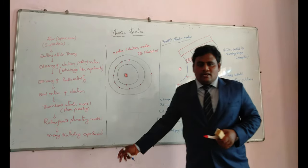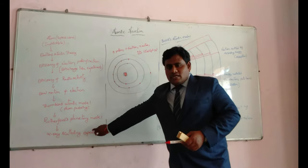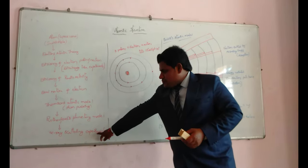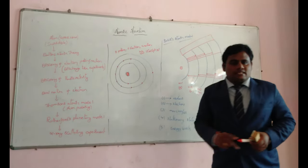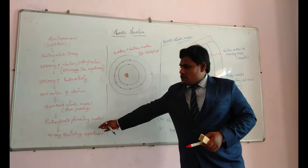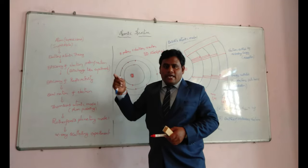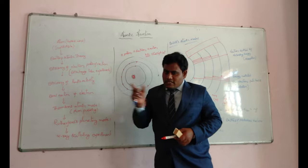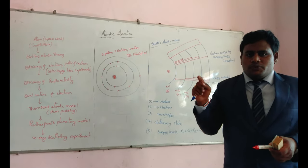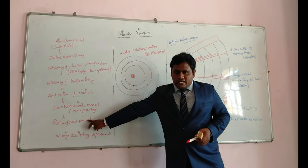Rutherford and his co-workers conducted alpha scattering experiments. By these experiments, it was proved that the atom contains a nucleus. The nucleus was discovered by Rutherford by doing alpha scattering experiments using radioactive elements and gold foils. By this, we would like to explain the discovery of sub-atomic particles — which means atom is divisible and contains many other particles. Out of these, electrons and protons are known as fundamental particles, and the remaining, like neutrons, are known as sub-atomic particles.